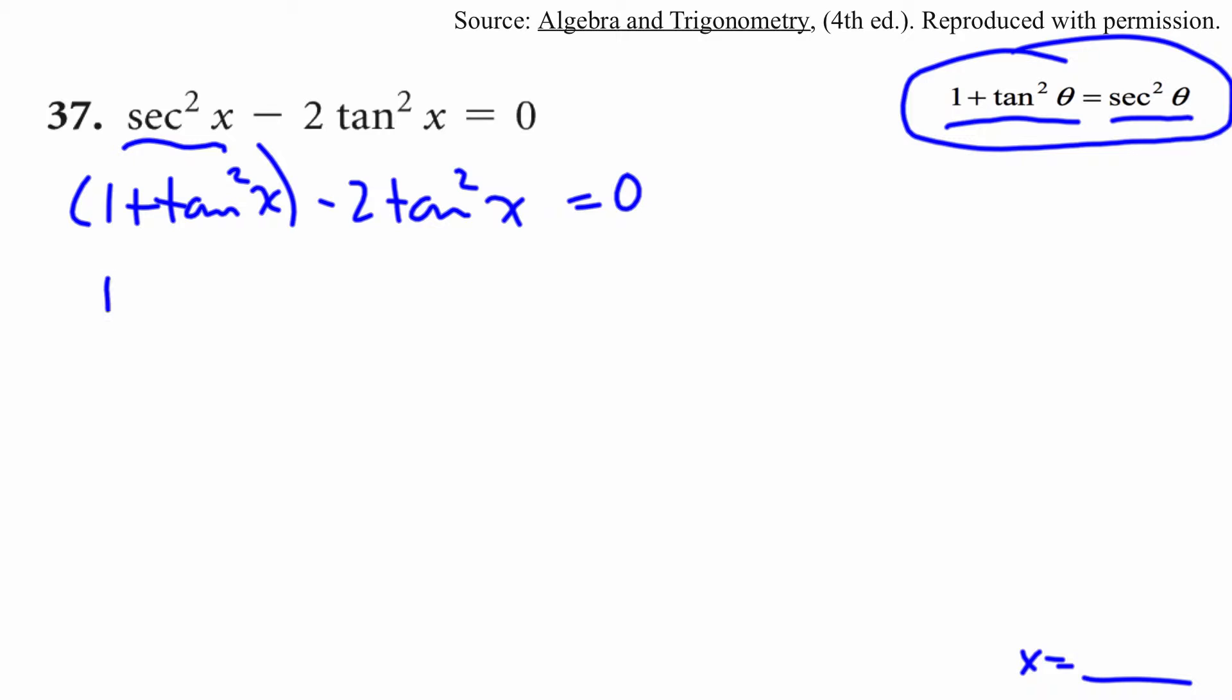Now, I'll drop the brackets. So 1 plus tan squared x minus 2 tan squared x equals 0. I can collect like terms because these both are tan squareds. So I'm up 1, I lose 2, so I'll be down 1. So I'd have 1 minus tan squared x is equal to 0.